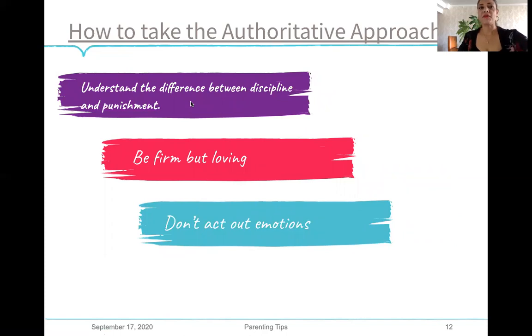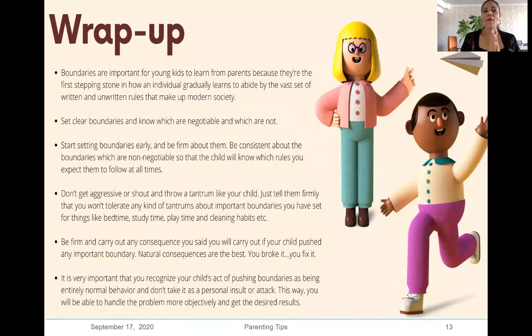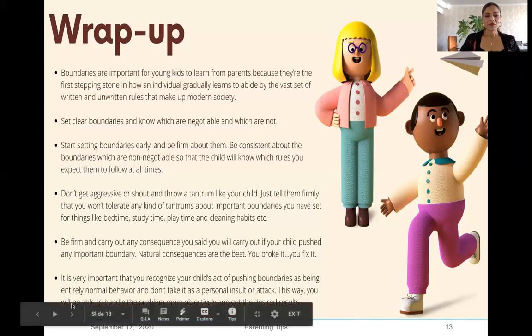Let's wrap up. Boundaries are important for young kids to learn from parents because they are the first stepping stone in how an individual gradually learns to abide by the vast set of written and unwritten rules that make up modern society. Set clear boundaries and know which are negotiable and which are not. Start setting boundaries from an early age and try to be firm about them. Don't get aggressive or shout or throw a tantrum like your child - just tell them firmly that you won't tolerate any kind of tantrums about important boundaries such as bedtime, study time, play time, etc. Be firm and carry out any consequence you said you will carry out. Be consistent, and it's very important that you recognize your child's act of pushing boundaries as being entirely normal behavior and don't take it as a personal insult or attack.